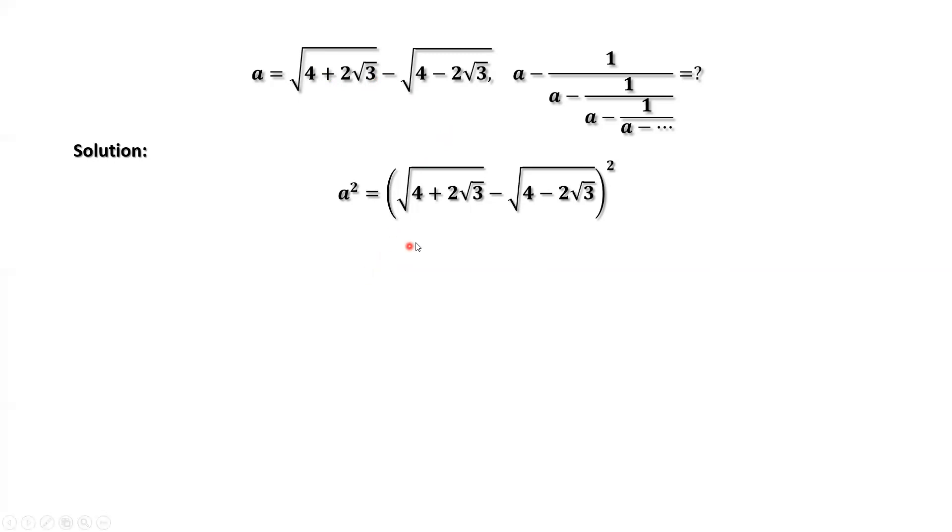We simplify the right-hand side. The first term is squared, the last term is squared, and the cross term. Simplify the inside part of this square root sign. Continue to simplify this part.